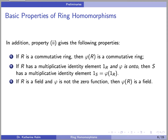We have proved that phi is one-to-one if and only if the kernel of phi is trivial. In addition, preservation of multiplication and addition give the following properties: if R is a commutative ring, then the image of phi is also a commutative ring; if R has a multiplicative identity element 1 and phi is onto, then S has a multiplicative identity element equal to phi(1); and if R is a field and phi is not the zero function, then the image of phi is a field.